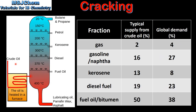In a previous video we looked at fractional distillation. In fractional distillation, crude oil is separated into its different fractions depending on their boiling points. In the table on the right we have the fractions, the typical supply from crude oil, and the global demand.